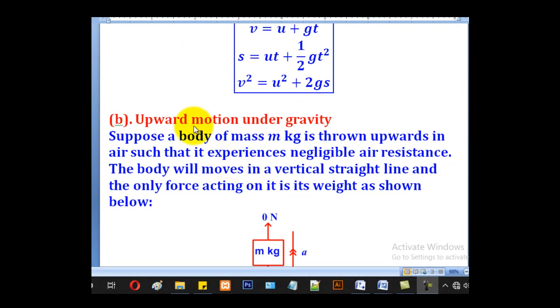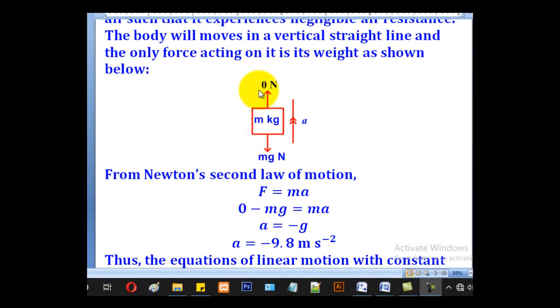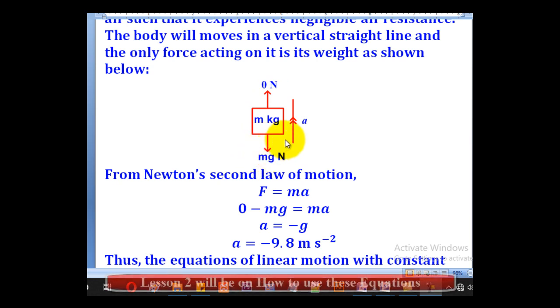What if it was upward motion under gravity? Suppose the body of mass m kilograms is thrown upwards in air such that it experiences negligible air resistance. The body will move in a vertical straight line and the only force acting on it is its weight as shown below. This is the body, mass is m kilograms, weight is mg newtons. There is no other force acting. Acceleration is going upwards.